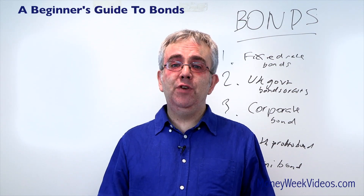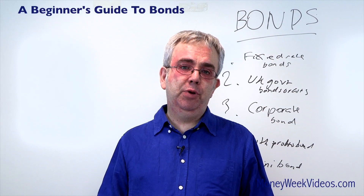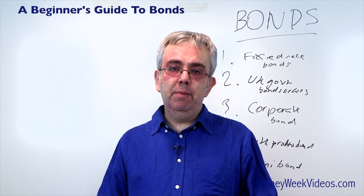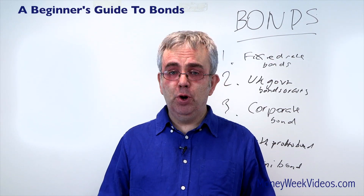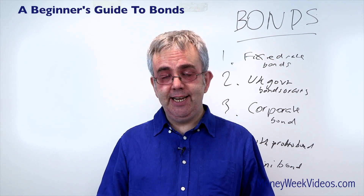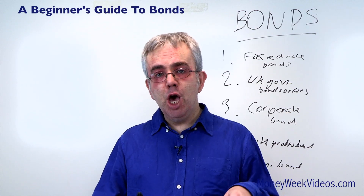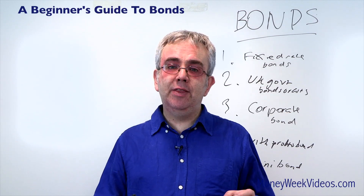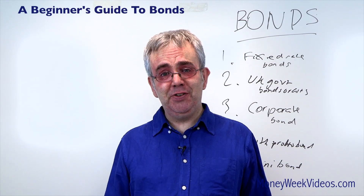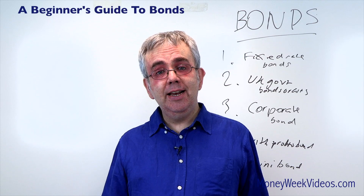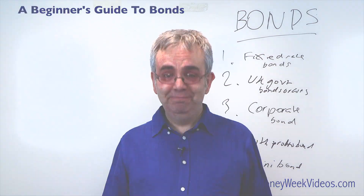So that's a quick overview of the five main types of bond. I'll be looking at gilts and corporate bonds in more detail in future videos, but hopefully I've just made the whole area a bit less confusing. I hope to see you in the next video.